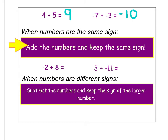So the difference when we have different signs is that this time I am going to subtract the numbers and keep the sign of the larger number. So with my examples, the first one I have negative 2 plus 8 — one's a negative, one's a positive. So I subtract the two numbers, 8 and 2, and I get 6. And then the positive number, which is 8, is the larger number, so my answer is going to be positive.